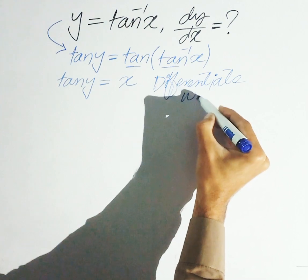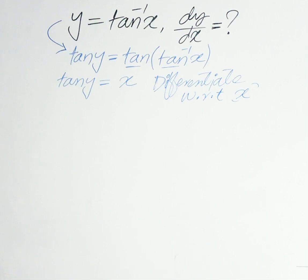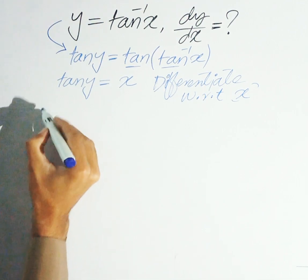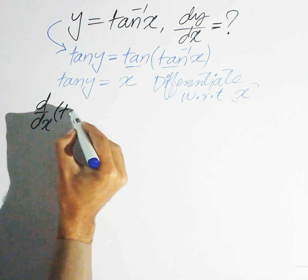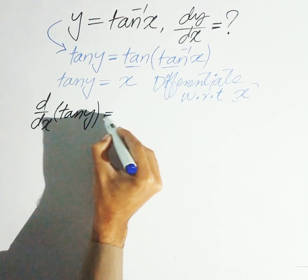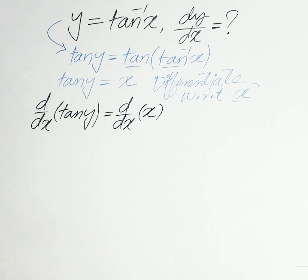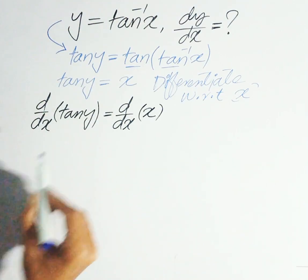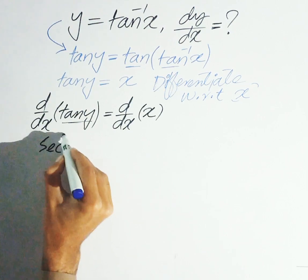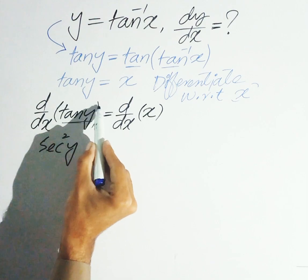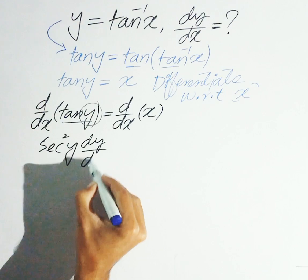Now differentiate with respect to x. So d/dx of tangent y is equal to the derivative of x. We know that the derivative of tangent y is secant squared y, but we also need the derivative of the argument, which is dy/dx.